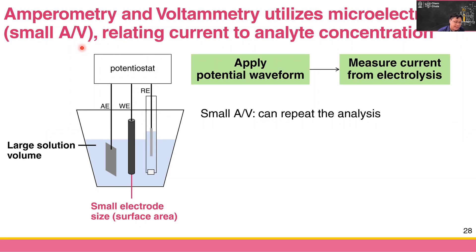In these techniques, we apply a potential or potential waveform, and we can generate the oxidation or reduction of the species. We then measure the current from these oxidation or reduction reactions and relate it back to the concentration of the analyte.